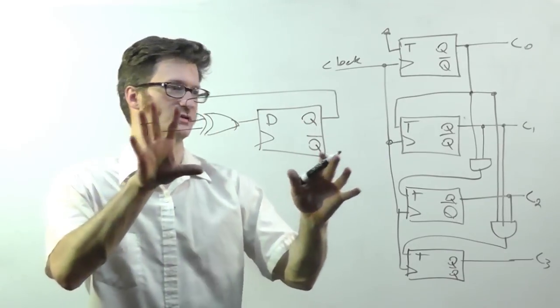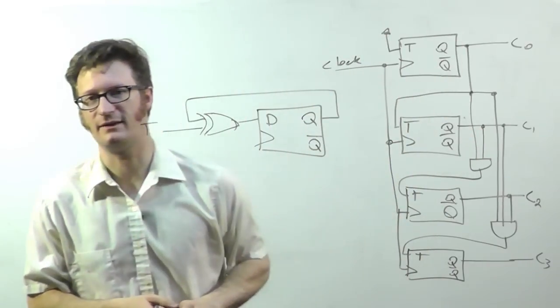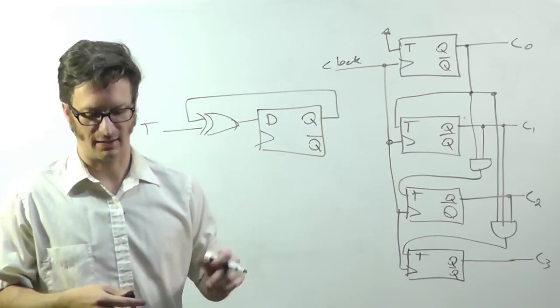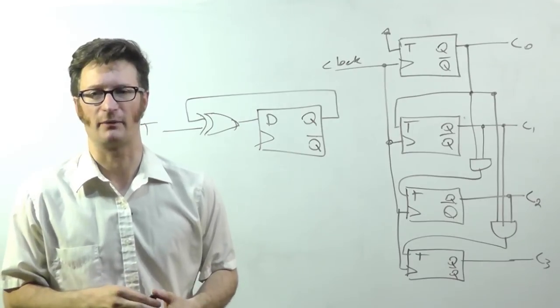And so that's how you essentially, if you take this circuit and plunk it in for a T flip-flop, that's how you get a binary counter that's synchronous with D flip-flops.